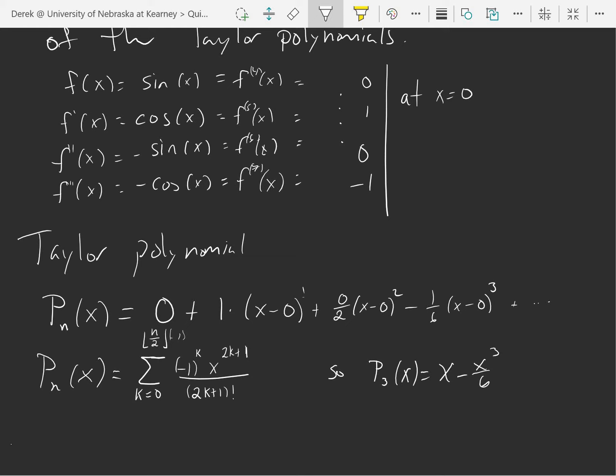Let's check that this is what happens here. If I put n equals 3 in, I get the sum from k equals zero to the floor of three halves is one, and I get negative one to the k, x to the 2k plus one over 2k plus one factorial, which is exactly that.